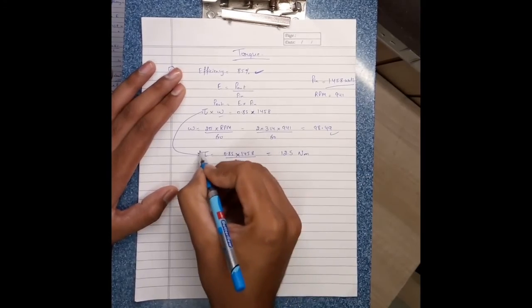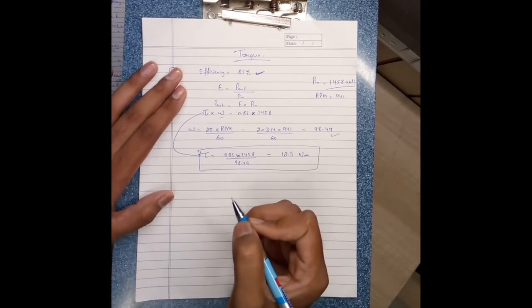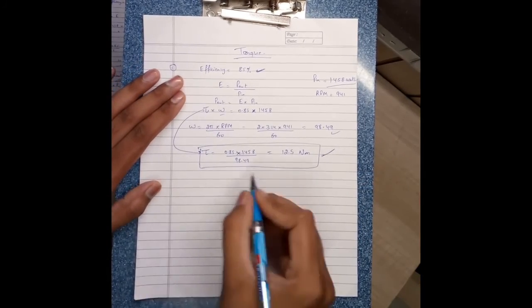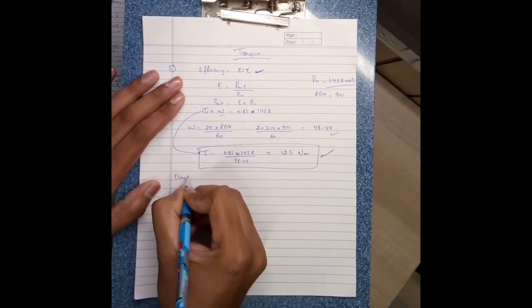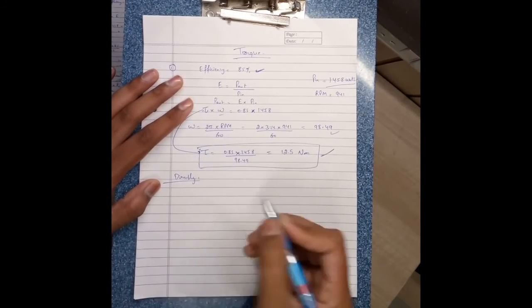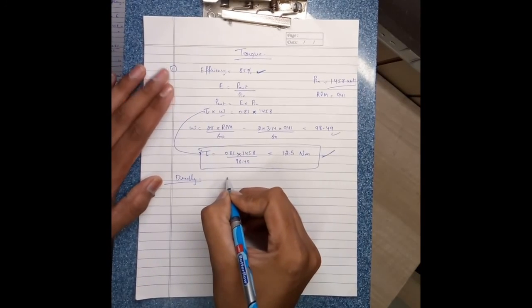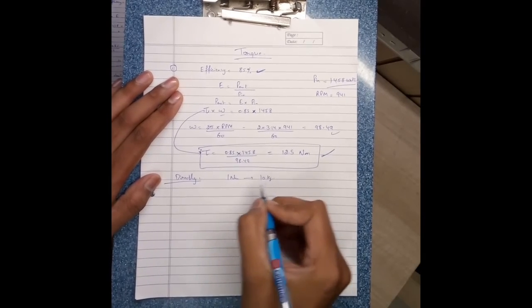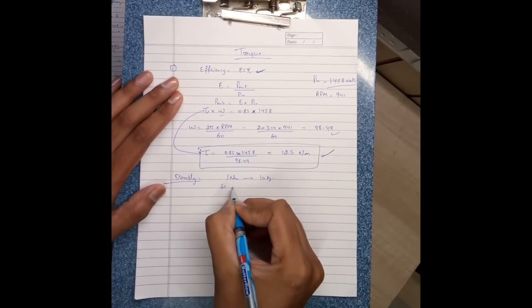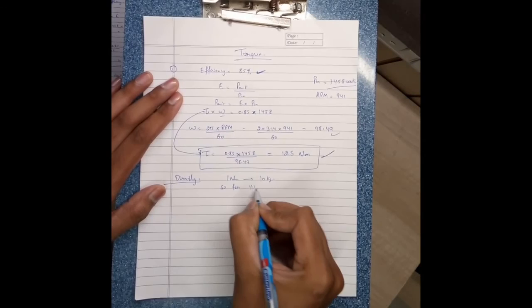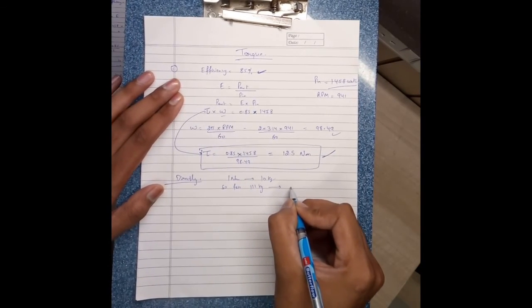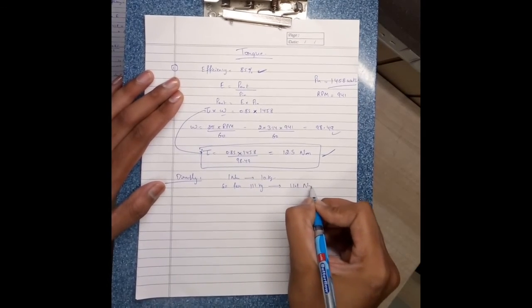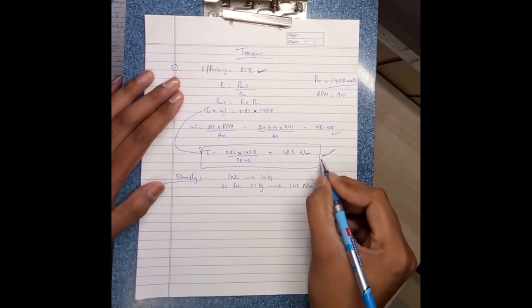This is the torque required for the vehicle. Alternatively, we can use a simple method: taking 1 Newton-meter equals 10 kg, for 111 kg mass it comes to 11.1 Newton-meters, which is close to this value. This is an approximation value.